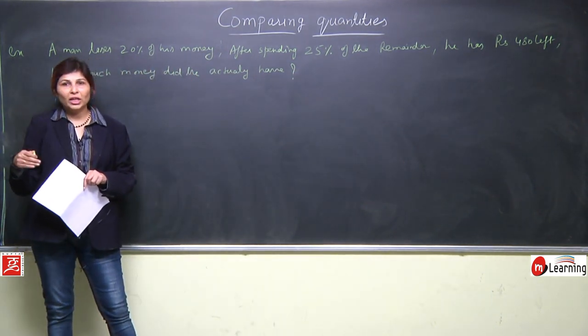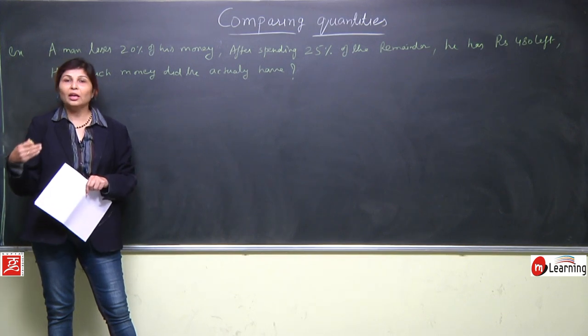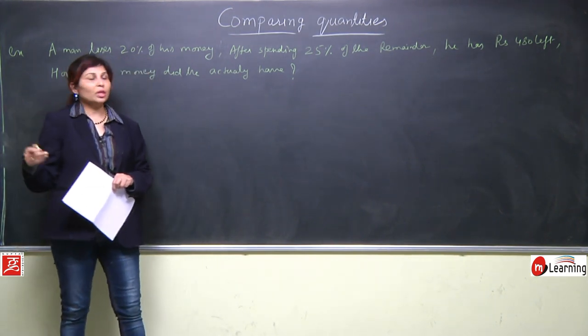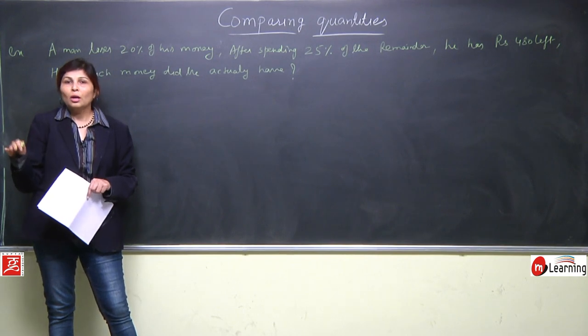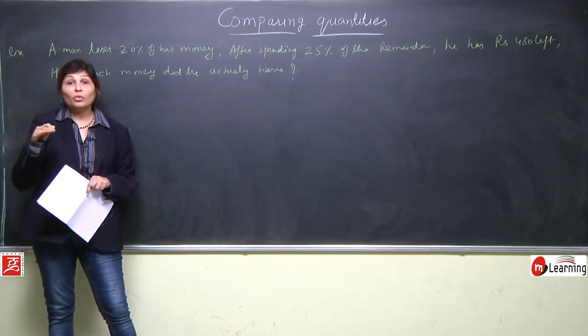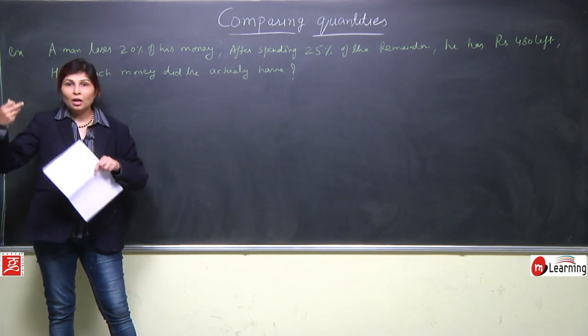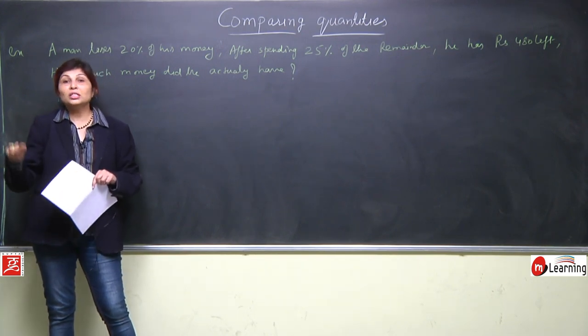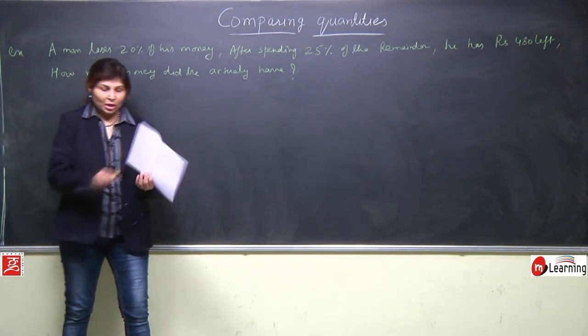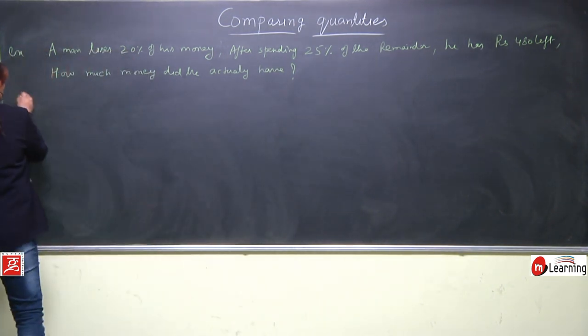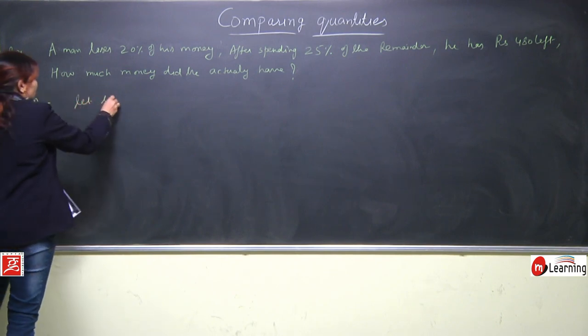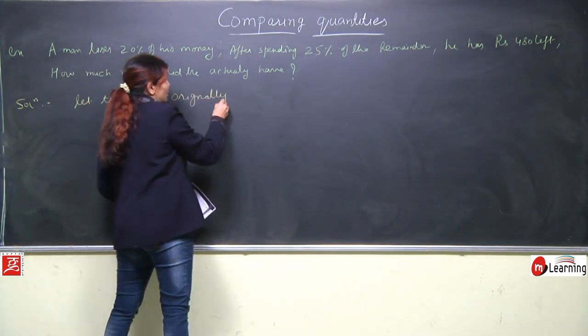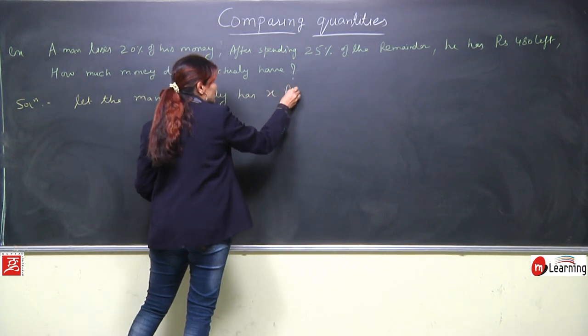We will assume 100, but we will do with x also and 100 also. First let's take one normal example. Let's say we have thousand rupees. From that thousand, first our 20 percent got lost. Means we'll find 20 percent of thousand, then we will subtract because that got lost. The amount is lost. So the remaining amount or you can say the rest of the amount, we will find out. In the same pattern we will solve this question.